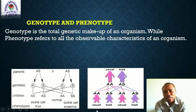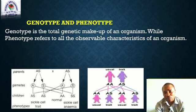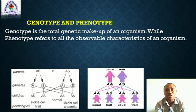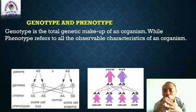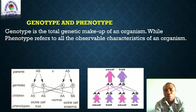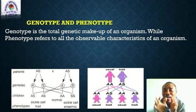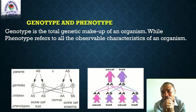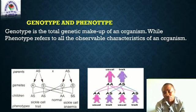Now, there are two terms that are normally used in genetics. What are these two terms? Genotype and phenotype. What is genotype? Genotype is the total genetic makeup of an organism — the total genes found in an organism are referred to as the genotype. While phenotype refers to all the observable characteristics of an organism — those traits that are physically expressed are referred to as phenotype.